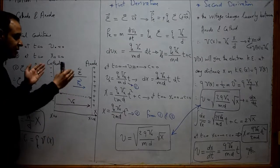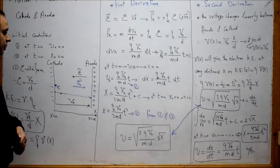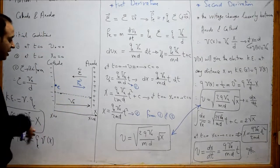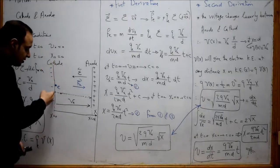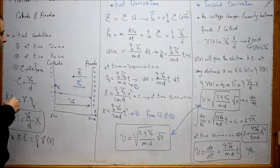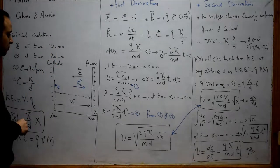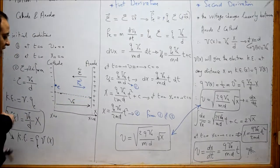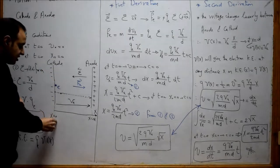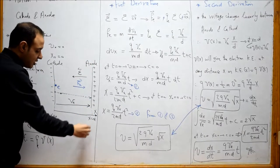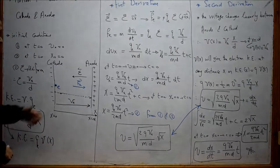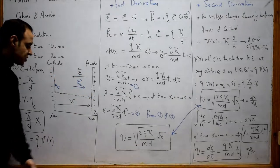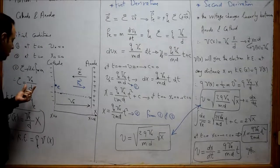Let's revise the setup of this problem. We have a negative cathode and a positive anode, and an electron placed at the cathode at t equal to zero with velocity equal to zero. The voltage between the anode and the cathode is Va and the distance is d. The cathode is placed at x equal to zero and the anode at x equal to d. The electric field is uniform, meaning the electric field at any point is constant, equal to the potential Va over distance d.